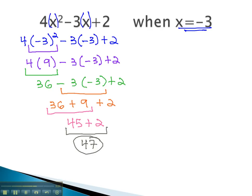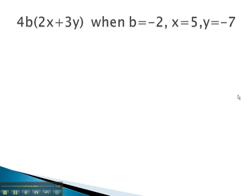Let's look at another problem where we replace the variable with the numbers it represents. Notice in this problem, we have b, x, and y. But we're told that b is negative 2, x is 5, and y is negative 7.